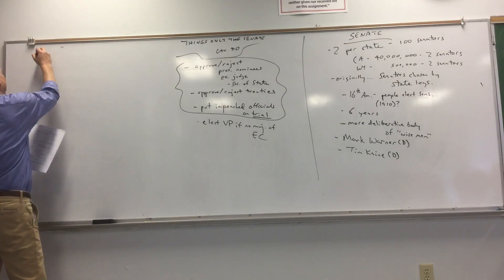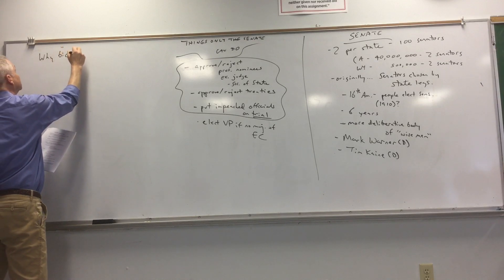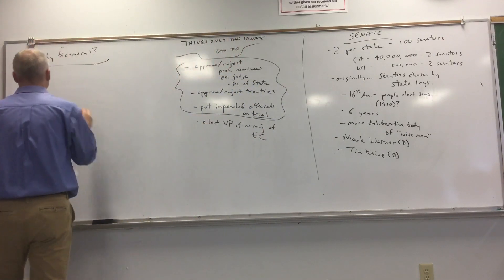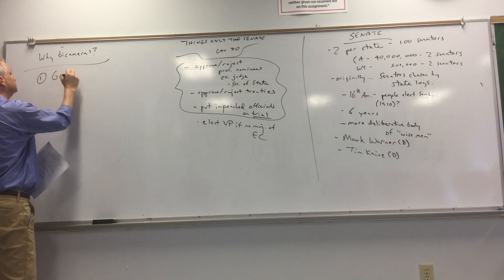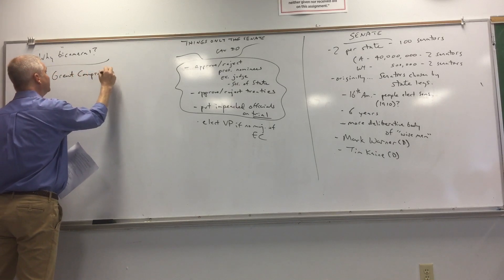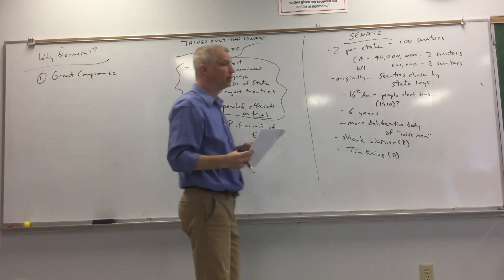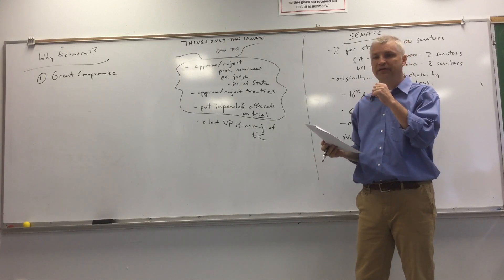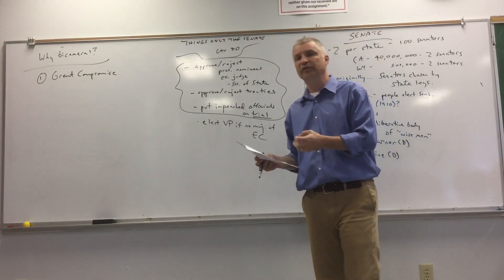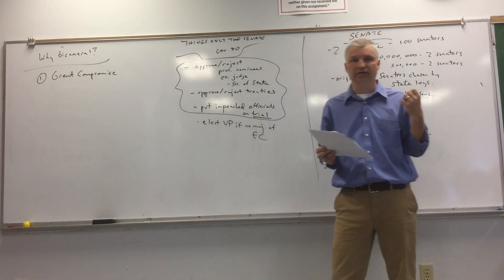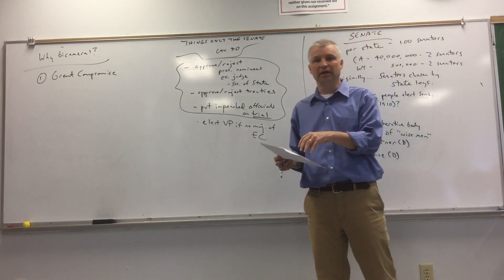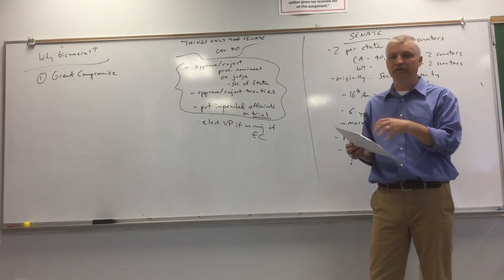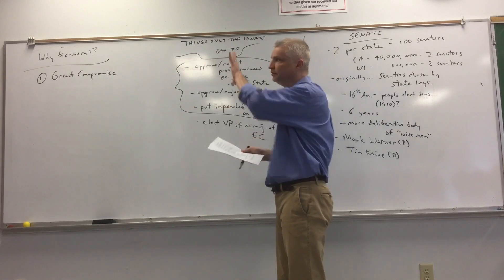Why did the Constitution set up Congress with two parts? There are two good answers. First, this was part of the Great Compromise, or Connecticut Compromise. States with a lot of people, like Virginia, wanted more representatives in Congress; states with fewer people, like Delaware, said every state should be equal. To get agreement, they split the difference — the Senate, where every state is equal, and the House, where states with more people have more say.